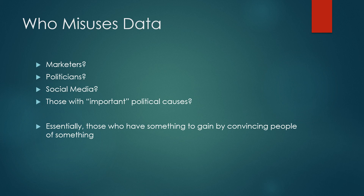Certainly politicians do this. A lot of the stuff we see on social media, whether it's marketing information or information intended to sway an audience, it doesn't always use the best sort of presentation of data or research. And then there's those with important political causes and economic causes as well, those that are really driven by something that is very important to them. They will present data that is not always meant to represent what they think it's representing. Essentially, those who have something to gain by convincing people of something.